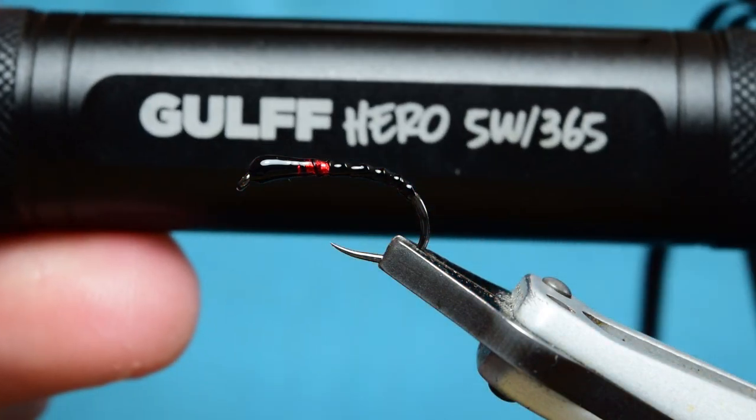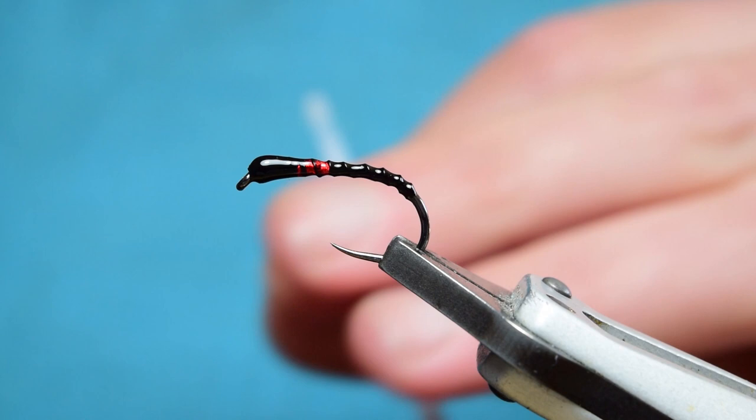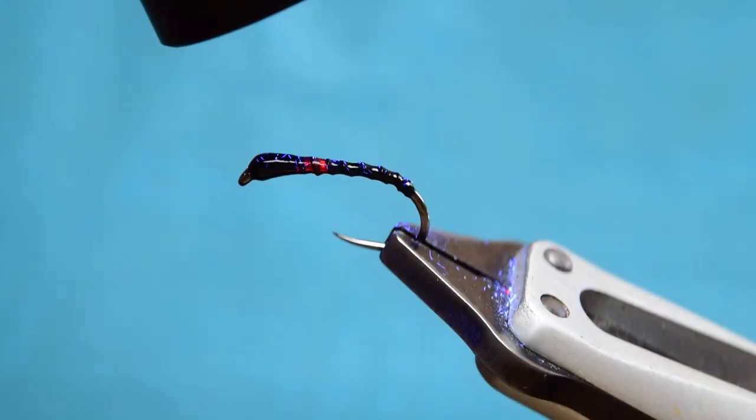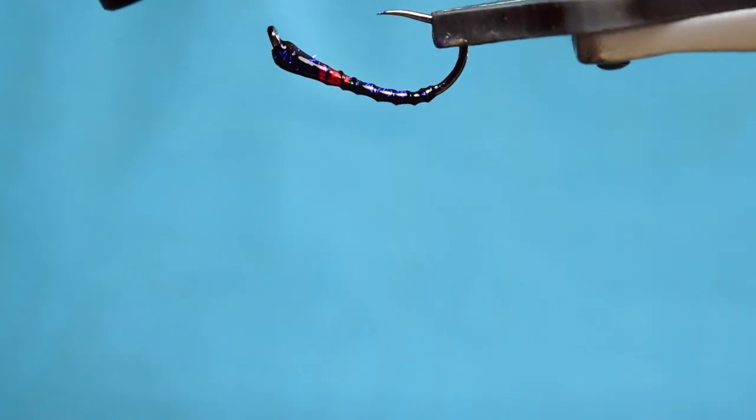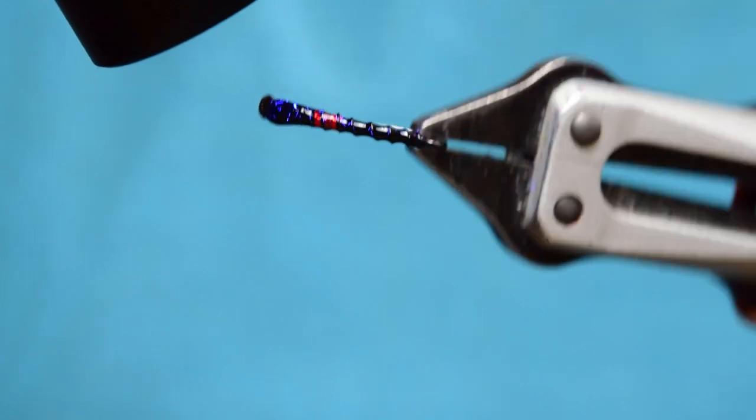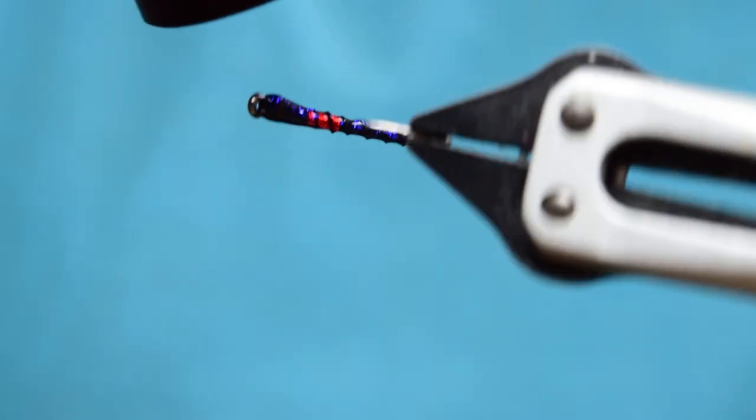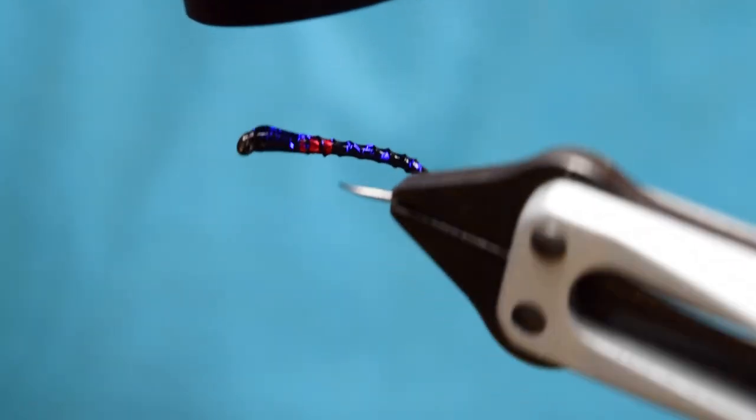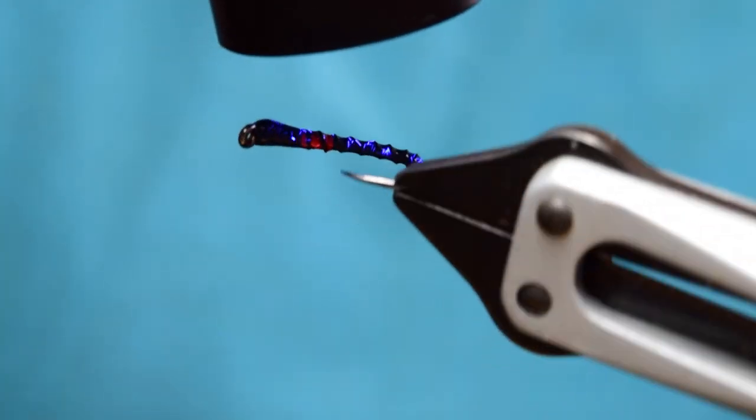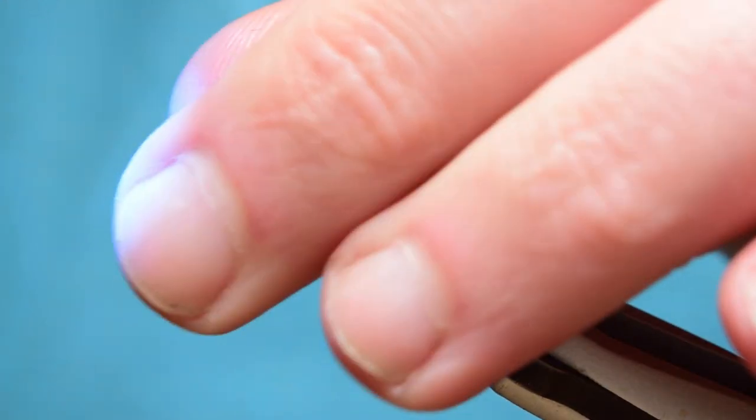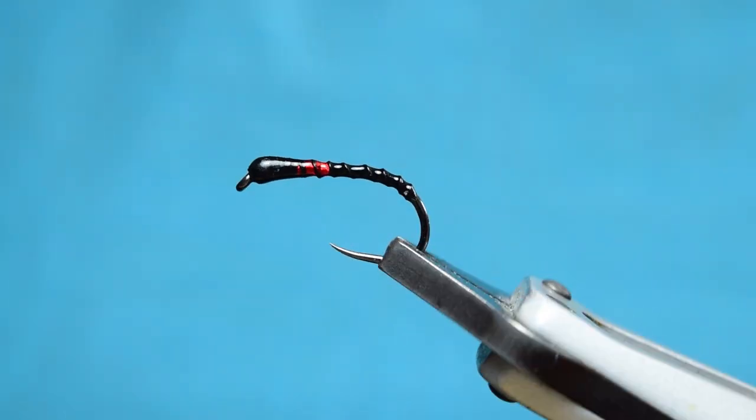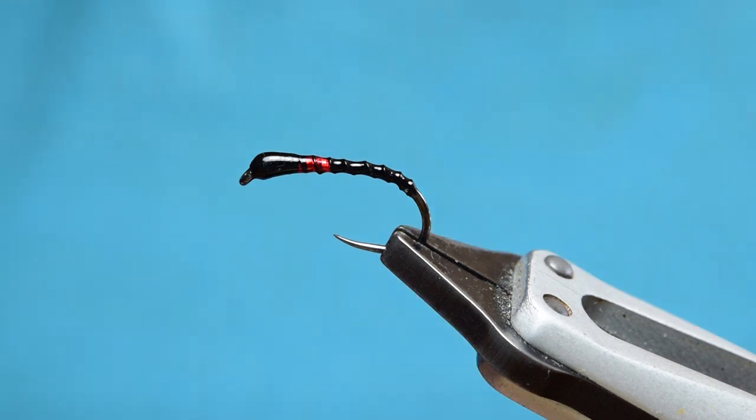I'm actually using a new torch today as well, it's the brand new Gulff Hero UV torch. I'm now just going to come in and set the resin on there. Unfortunately I've been a little bit rough and there's a few little specks of the white brush in there, but it's absolutely fine. Fish don't care and they're not going to see it. So there's that set nicely.